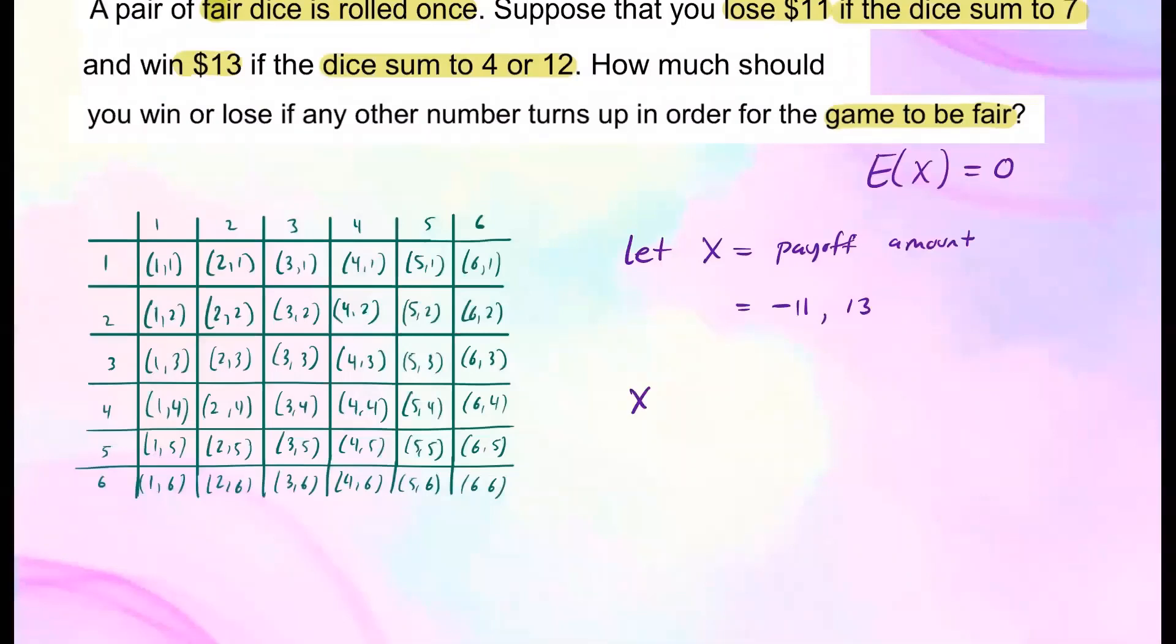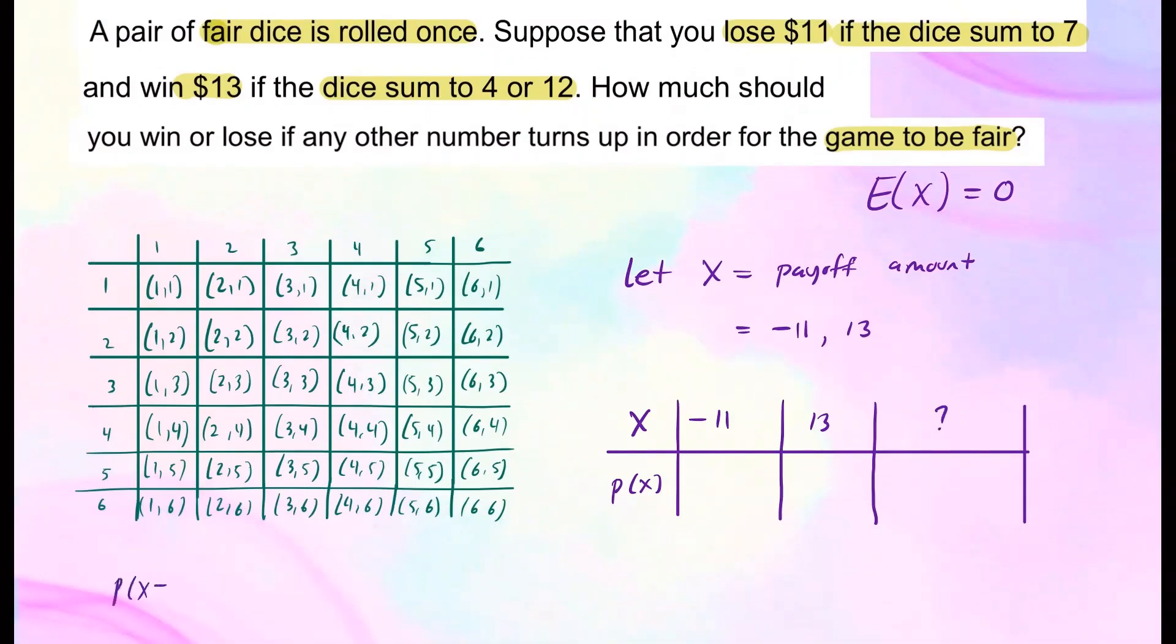Here's our x row right here. And then here we're going to have their probabilities. And x is going to take the value negative 11, 13, and there's also going to be one unknown for the last possible outcomes. Let's put this as a question mark. So the probability that we lose $11, that's going to be...